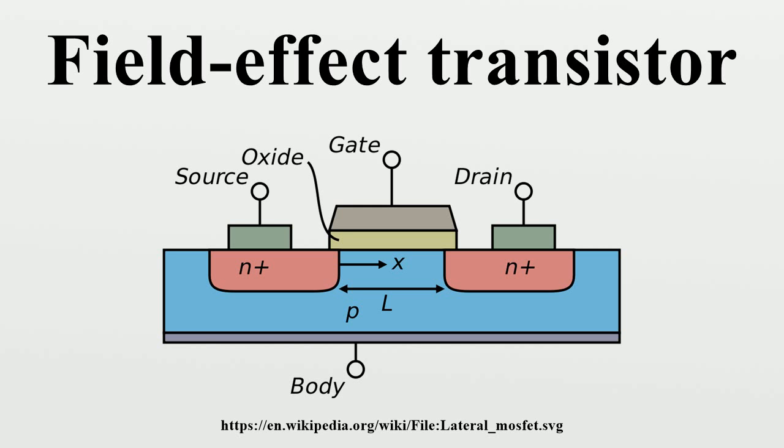The GNRFET uses a graphene nanoribbon for its channel. The VESFET is a square-shaped junctionless FET with a narrow slit connecting the source and drain at opposite corners. Two gates occupy the other corners and control the current through the slit.